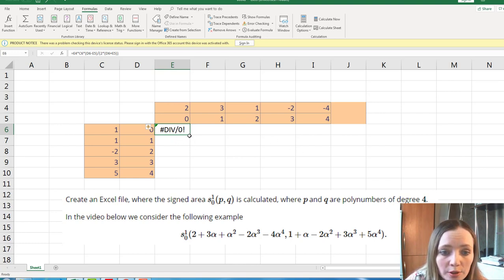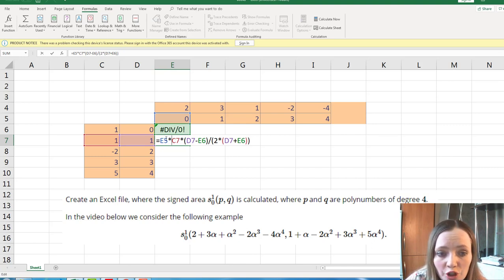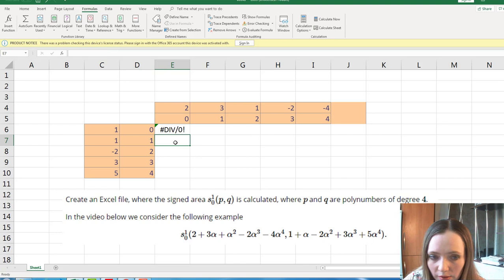Now, if we will try to repeat the formula, for example, in the next cell, you see that here it must be the product of these two coefficients. But you see that the Excel took automatically e5 times c7. We need e4, right? Therefore, we need to tell Excel do not change this number of the cell. Let me delete it.